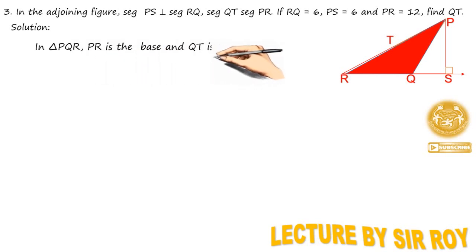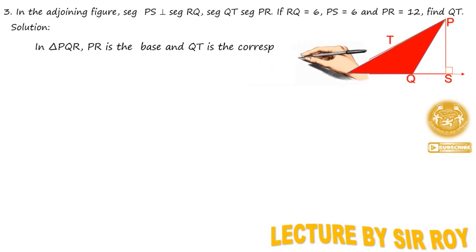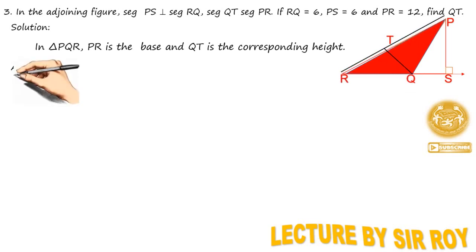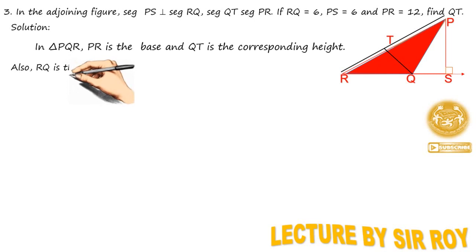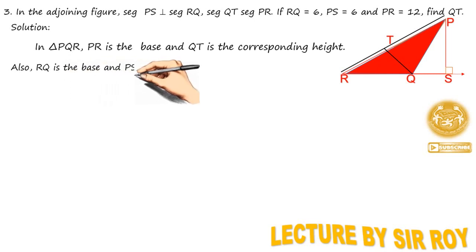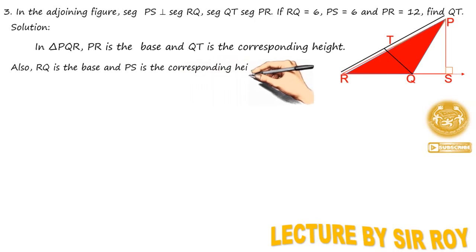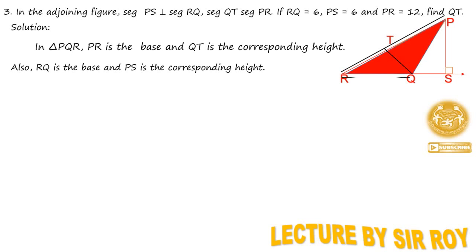Base PR है और height है QT। Screen में एक black line आएगा जो उसका base denote करेगा और उसका height denote करेगा। PR base है, QT height है। अब RQ is a base and PS is a height। इसी triangle को अगर P को tip point पकड़ें तो RQ base बन सकता है और PS उसका height — PS उसका height है।